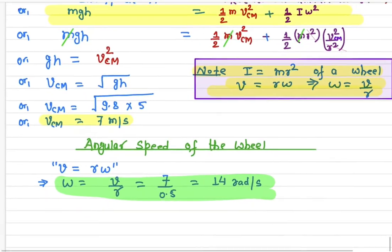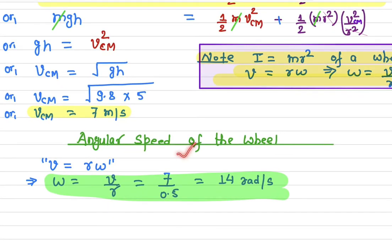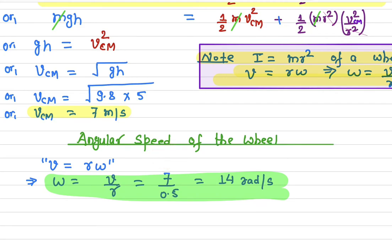Once you know the center of mass velocity, you can calculate the angular speed. The angular speed is given by ω = v / r. In this case, v_cm is 7 m/s and the radius is 0.5 meter, so the angular speed is 14 radians per second.